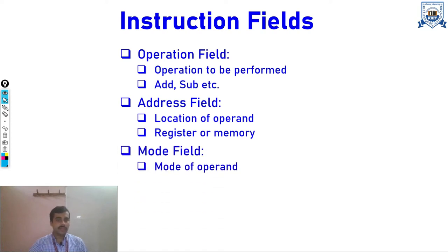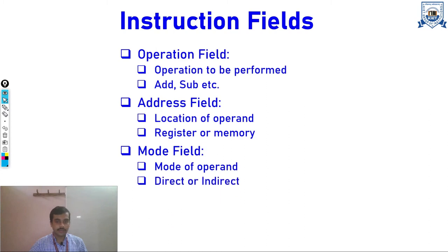The address may refer to a register or it may be an address located in memory. Next comes the mode field, which tells about the mode of the operand — meaning how our machine will select the operand from the instruction. It may be direct or indirect; that will be taught in addressing modes.